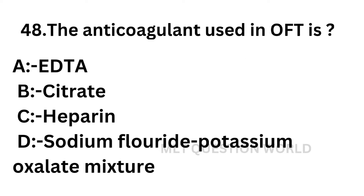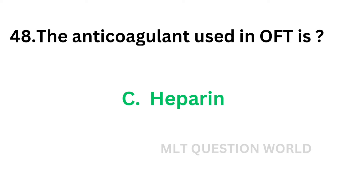Question number 48: The anti-coagulant used in osmotic fragility test is — option A: EDTA, option B: Citrate, option C: Heparin, option D: Sodium fluoride/potassium oxalate mixture. Which of the following anti-coagulants is used for osmotic fragility test? The correct answer is option C, heparin. Heparin is used for the osmotic fragility test.